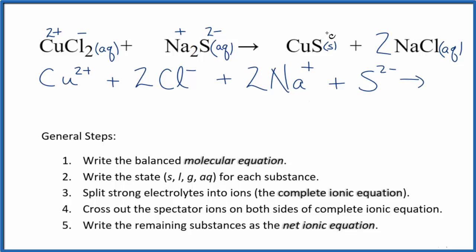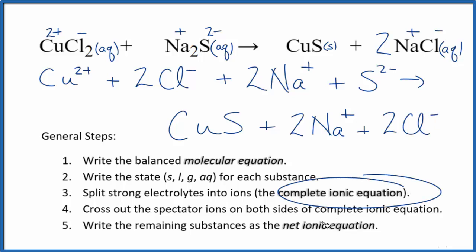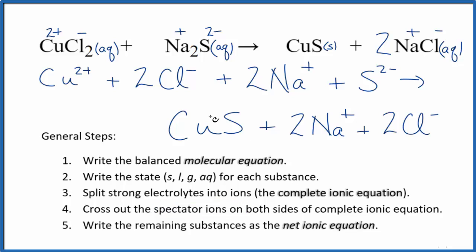For the products with net ionic equations, we don't split solids apart. This will just be CuS — we'll keep it together. And then we'll have the sodium and chloride ions: two sodium ions, just like the reactants, and then two chloride ions, also like the reactants. This is what we call the complete ionic equation. Now we can cross out spectator ions — they're on both sides. In the reactants, I see two chloride ions, and in the products I also have two chloride ions. Those are spectator ions.